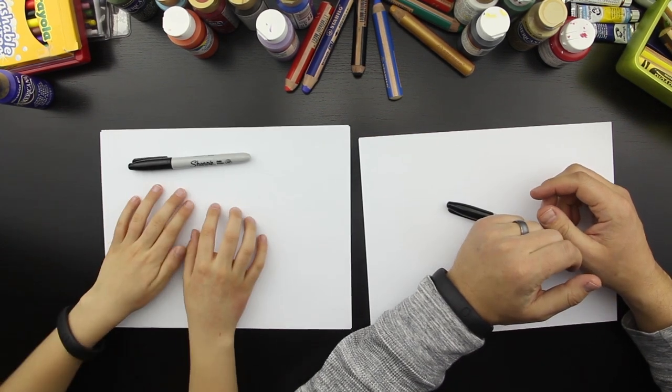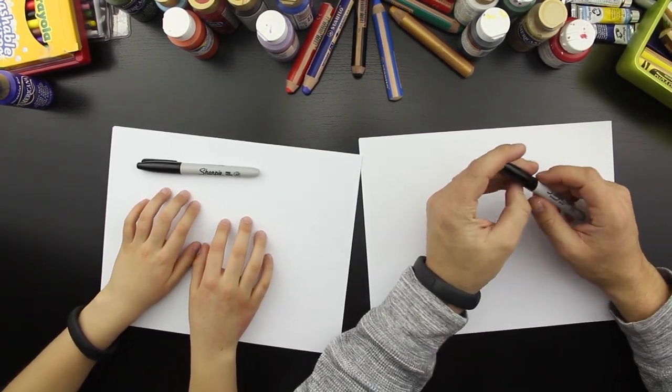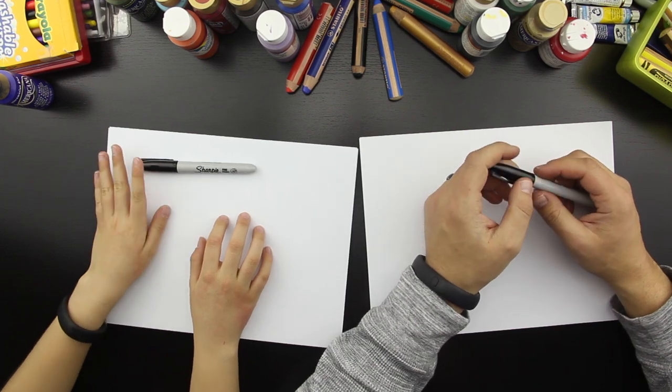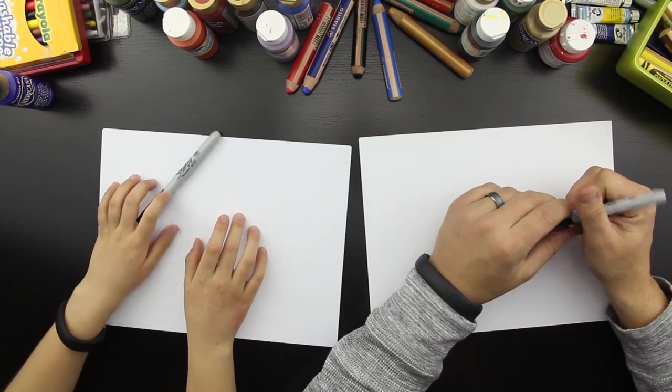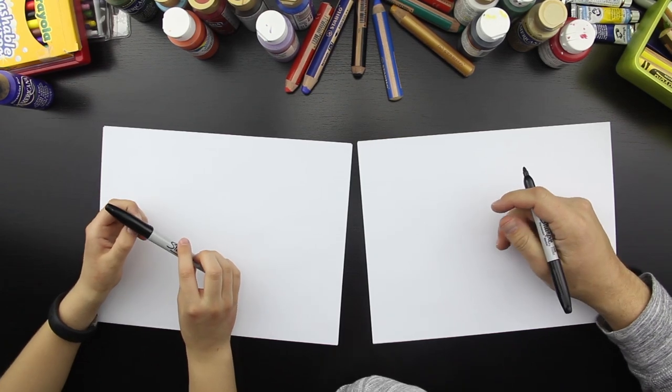Hey, this is Rob at art4kidshub.com and I got my cool kid with me. Chuckers! What are we going to do today? We're going to draw a toucan! A toucan! What's a toucan? A toucan is like a bird with a long beak.